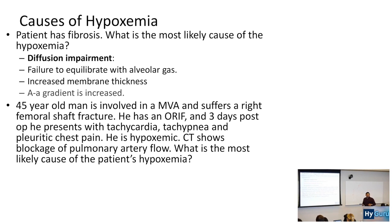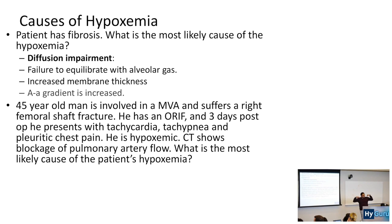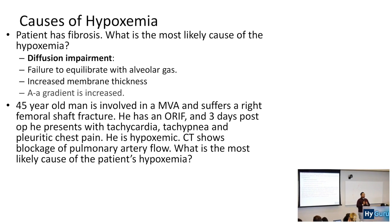A 45-year-old male is involved in an MVA — motor vehicle accident. He suffers a right femoral shaft fracture. He has an ORIF — open reduction internal fixation. The orthopedic surgeons went in and fixed it in the operating room. Three days post-op, he presents with tachycardia and tachypnea as well as pleuritic chest pain. Any time you hear tachycardia and tachypnea, give your respects to a pulmonary embolism. He is hypoxemic, and CT shows blockage of pulmonary artery flow.